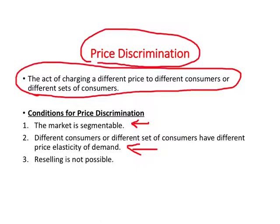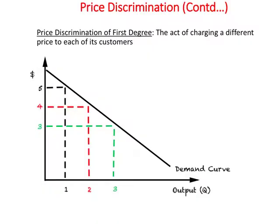The third condition for price discrimination is that reselling is not possible — the person who receives the good at a lower price cannot sell it to a customer who would pay a higher price. Price discrimination is also distinguished by degree, reflecting the effectiveness with which it is applied.